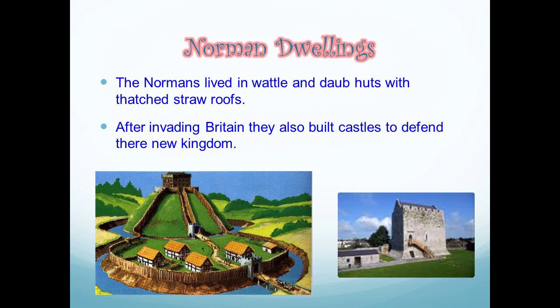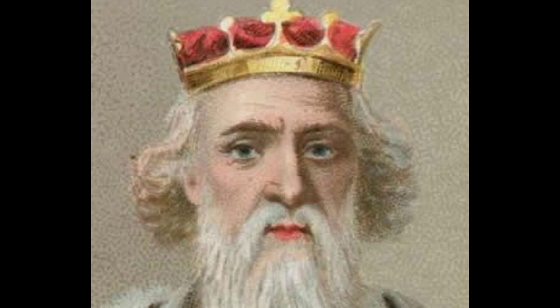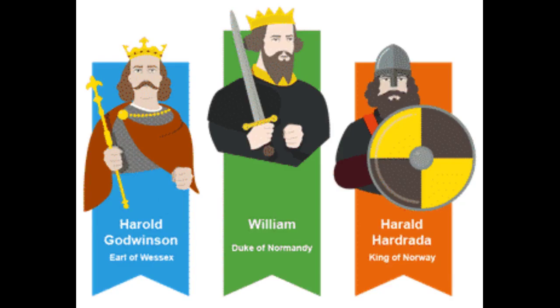The Norman Conquest came about mainly because of the death of King Edward of England. King Edward was known as Edward the Confessor. His death occurred in 1066, and when he died, he left the throne of England without a clear successor. The key player was Duke William of Normandy. Duke William was the illegitimate son of the old Duke and fought his way to the top. After the death of King Edward, William — a distant relative and cousin of King Edward — claimed the throne of England.